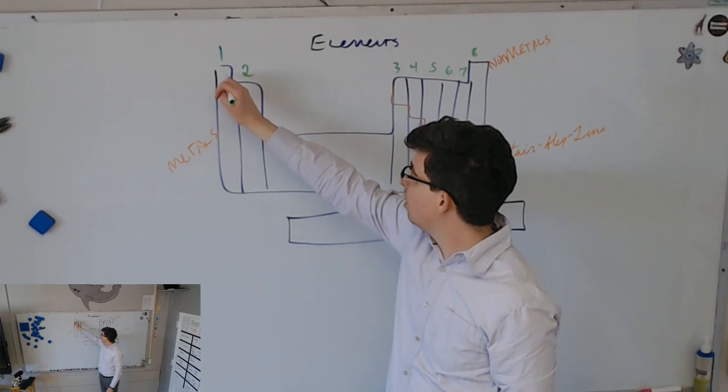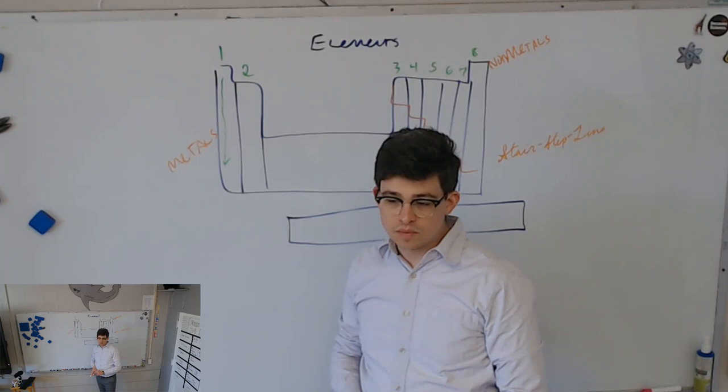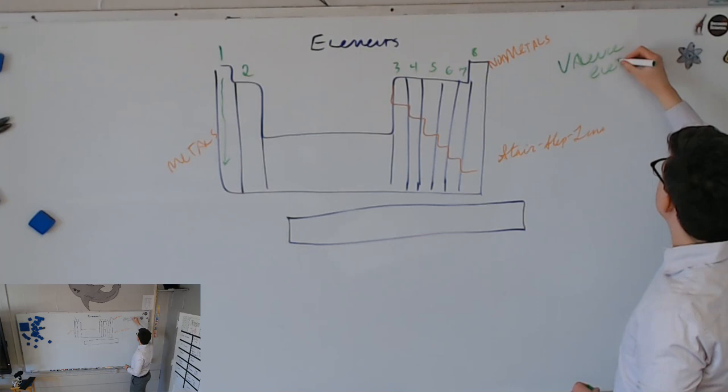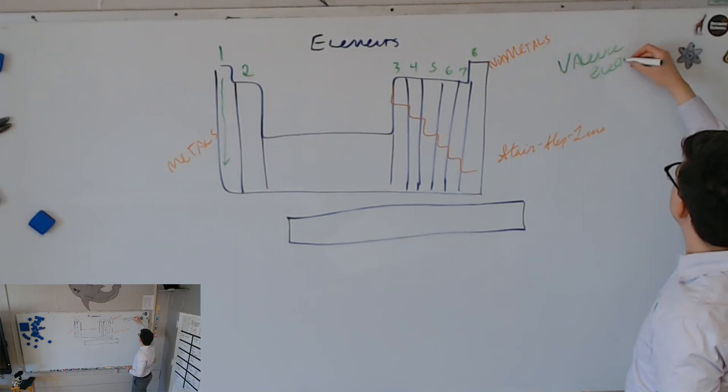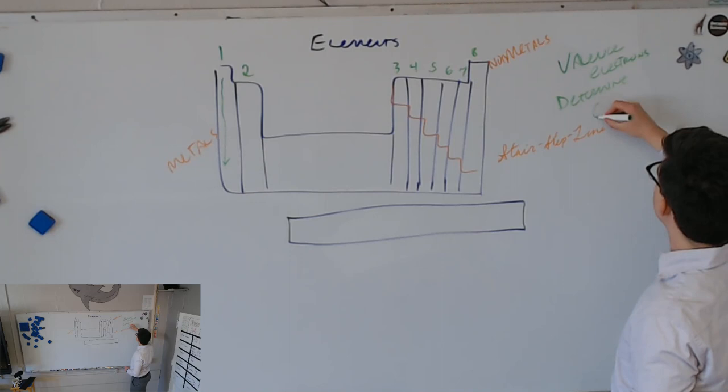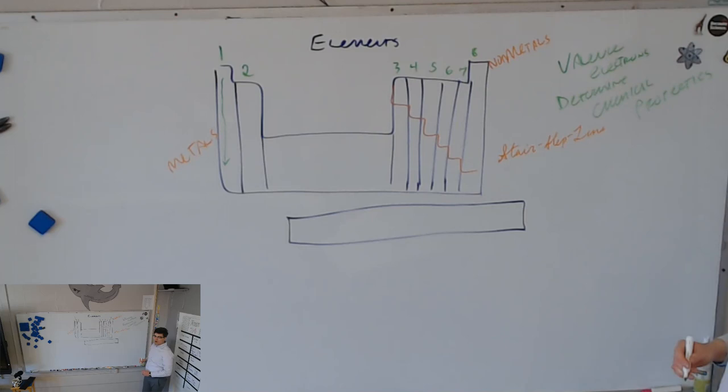But for now, we know how many valence electrons these things have, and check it out. Each column, because it has the same number of valence electrons, all of these have one valence electron. They have what else is true of them? They have similar properties because, write this down, valence electrons determine chemical properties.